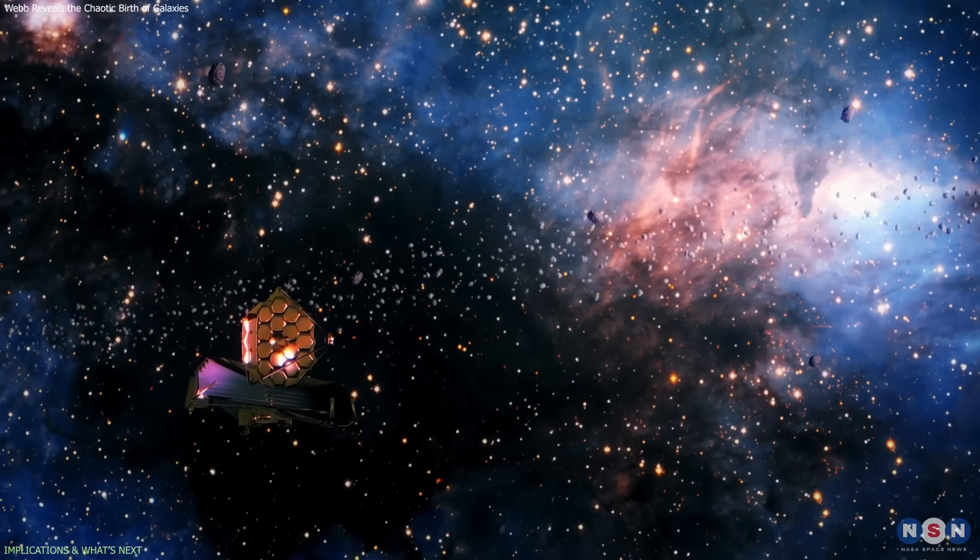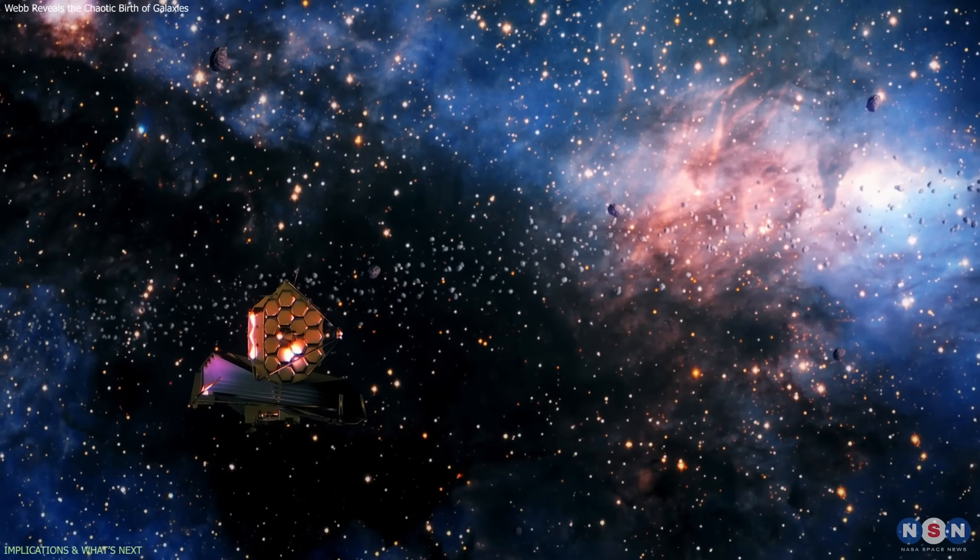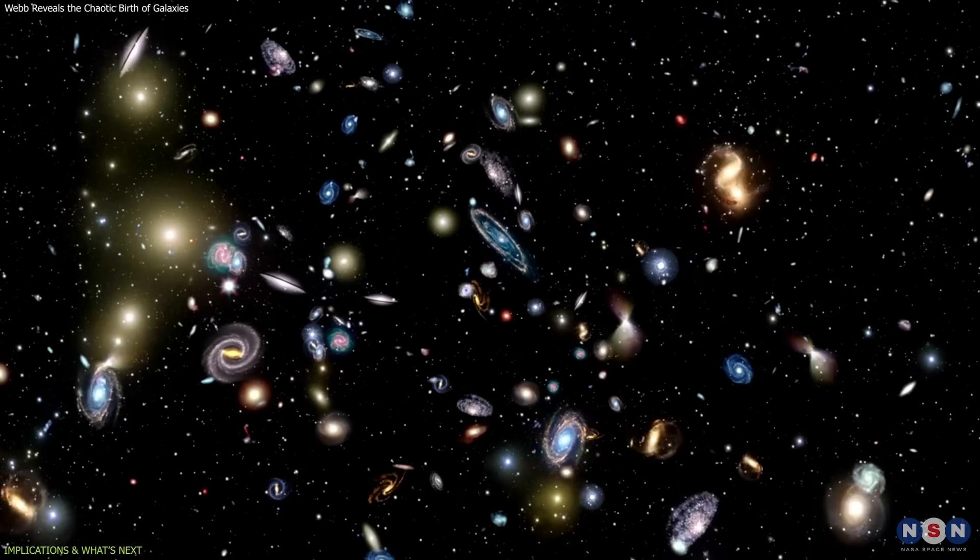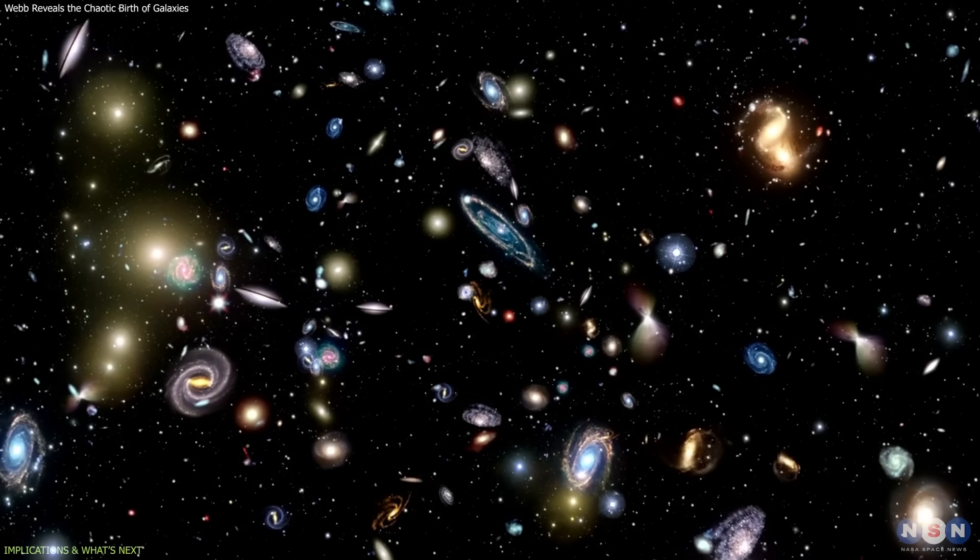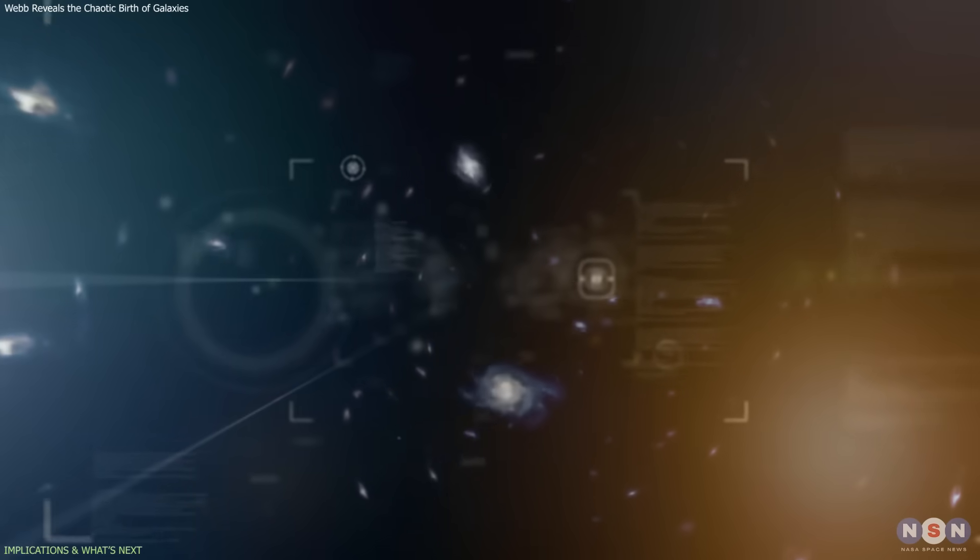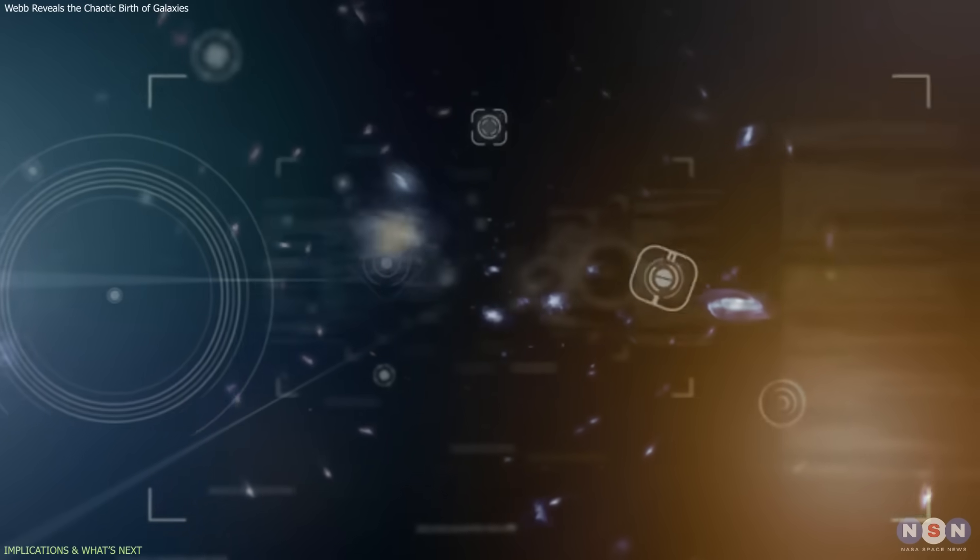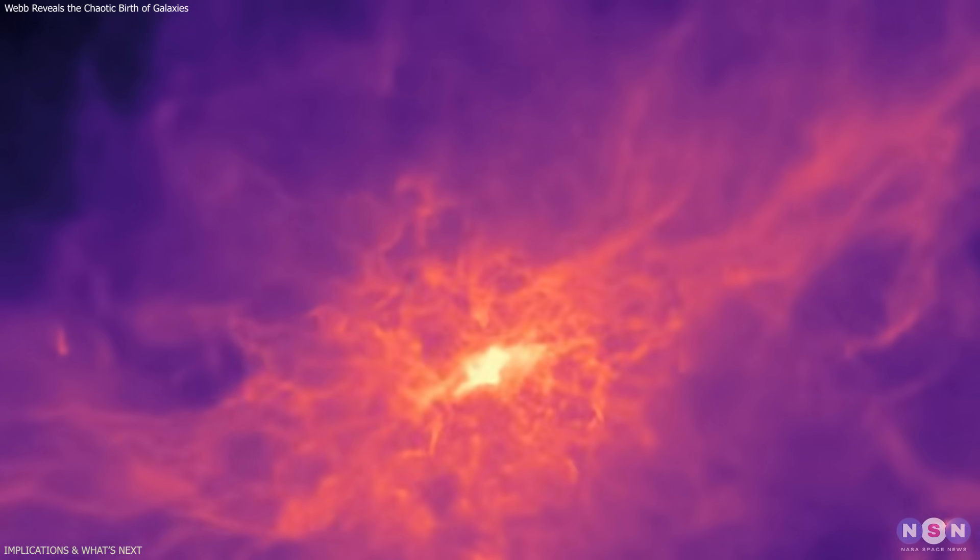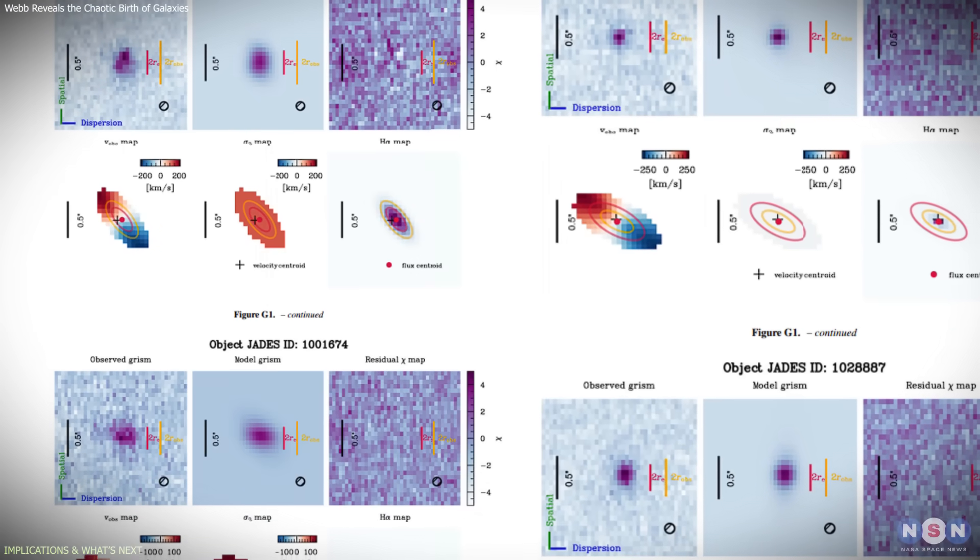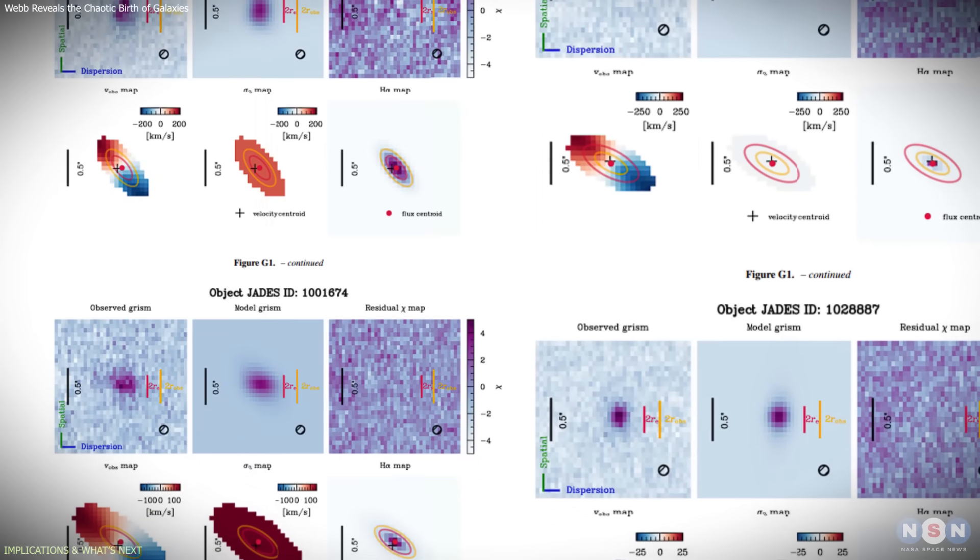Second, expanding observational horizons. JWST's sensitivity allows astronomers to examine not just a few extraordinary galaxies, but entire populations. This opens the door to studying other properties of the same systems, including cold gas and dust. Combining these datasets will help reveal how turbulence transitions into stability.